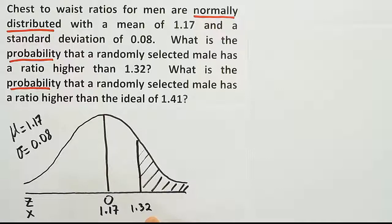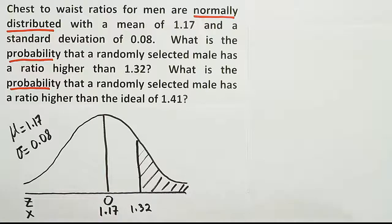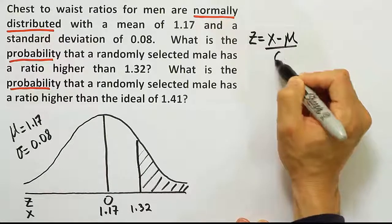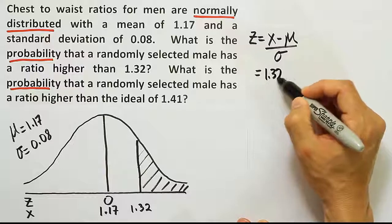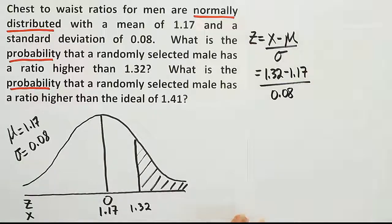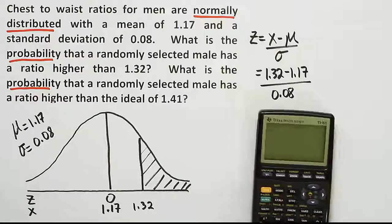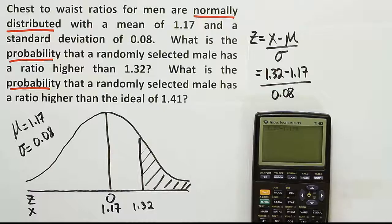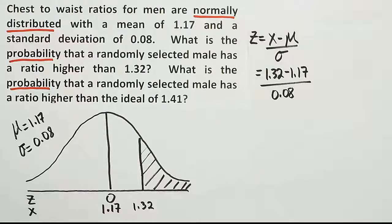Alright, now again, we cannot look up 1.32 on the z-chart directly because it's not a z-score. So we're going to need to convert it to a z-score first. So let's go ahead and do that. Z is equal to x minus the mean over sigma. So therefore we're going to have 1.32 minus 1.17 over 0.08. So we'll have 1.32 minus 1.17 divide that by 0.08 and we get the answer 1.875. And we'll round that to 1.88.